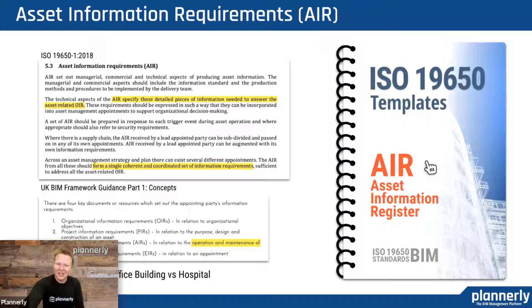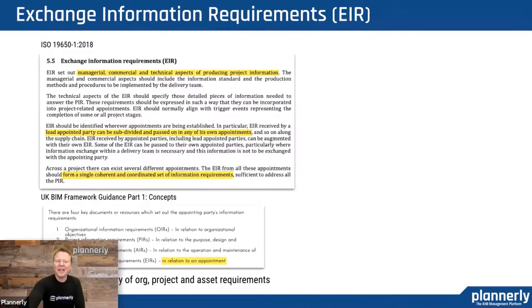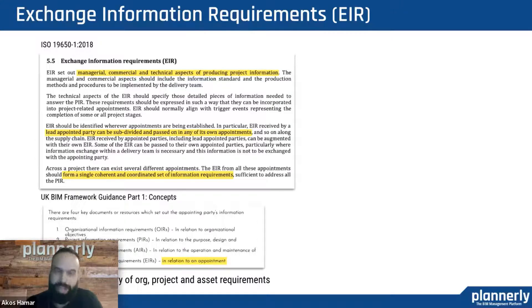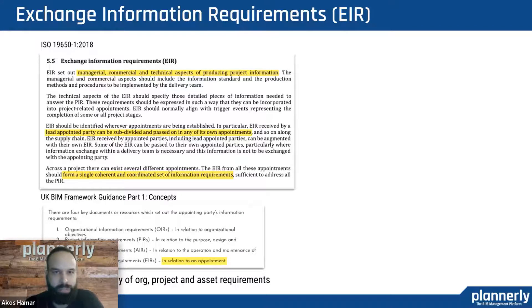We have a list of potential assets and a comprehensive list of all the elements we might have inside the building. When it comes to exchange information requirements, that's the combination of the previously mentioned organizational, asset, and project information requirements. This is really a contractual document that the appointing party sends out to potential project participants to tender on, and they return their way of approaching and executing the project. We do have a template for that, but ideally you might want to use your existing documents or use the OIR, AIR, and PIR documents we provide to assemble your project-specific EIR in the application.